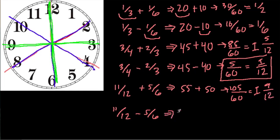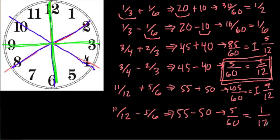Here, when we're subtracting them, this is a little bit easier. 55 minus 50 gives us five out of 60, same thing here, which is one twelfth. Okay, we're going to move on to some tougher ones next.